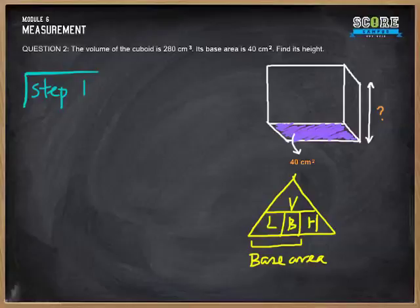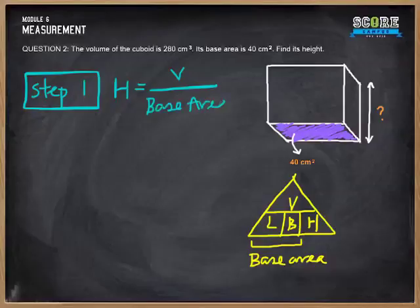Height equals, step 1, height equals V, volume over base area. Let's plug in the figures because we have been given all the figures: 280 over 40. Do the mathematics, and you get 7 cm. And that is your final answer. Well done.